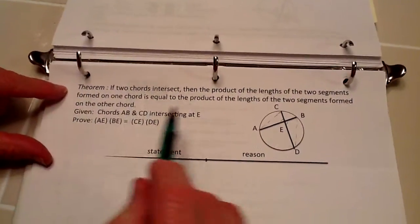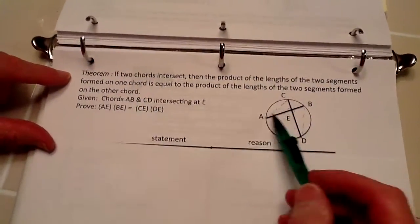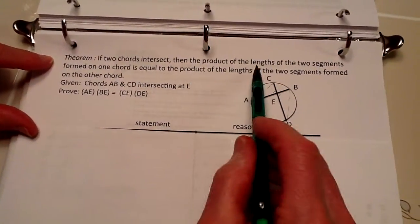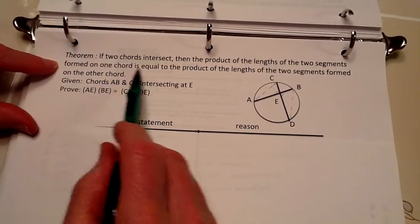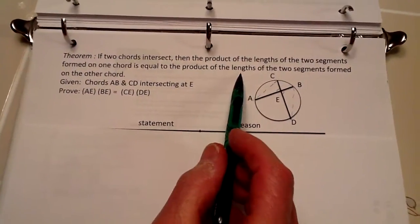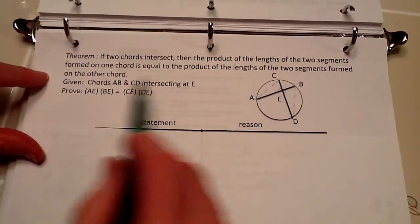Now, to prove this theorem, if two chords intersect, then the product of the lengths of the two segments formed by one chord is equal to the product of the lengths of the two segments formed by the other chord.